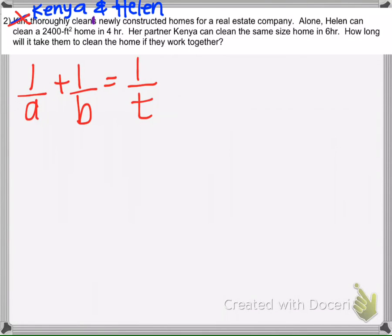Alone, Helen can clean a 2,400 square foot home in four hours. So four hours to clean a house that's this big right here. Kenya can clean that same house, the same size, in six hours.